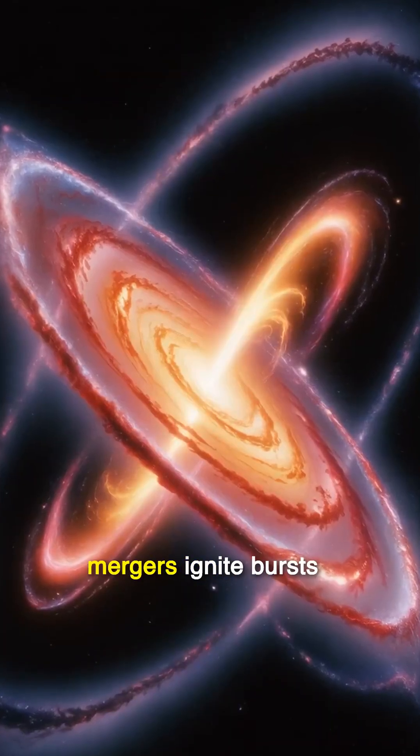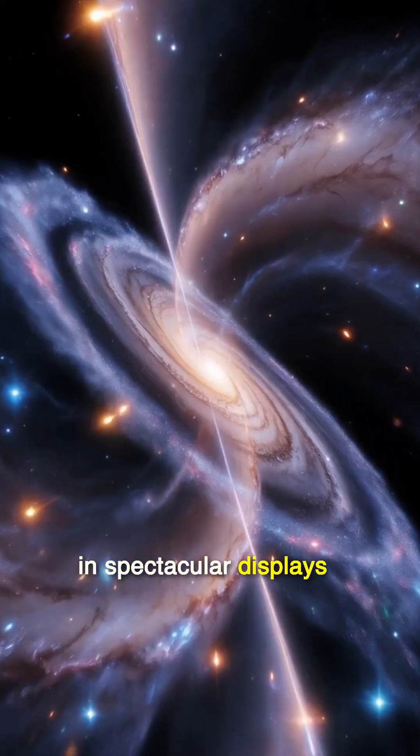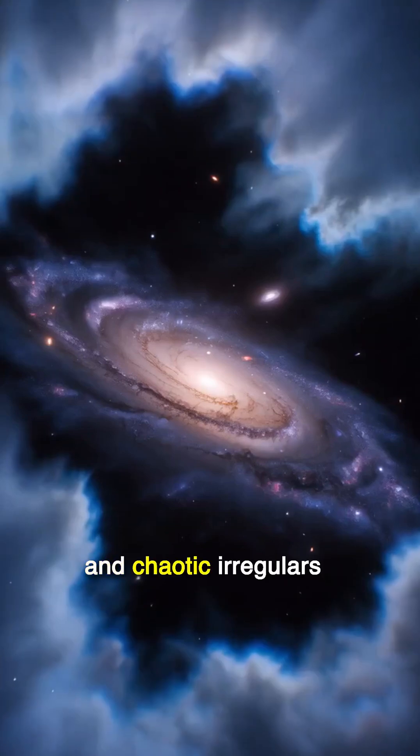Within the galaxies, collisions and mergers ignite bursts of new stars, reshaping their forms in spectacular displays. Galaxies come in diverse shapes: elegant spirals, luminous ellipticals, and chaotic irregulars.